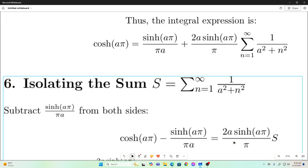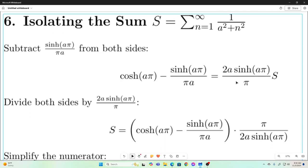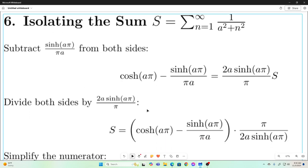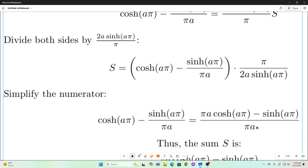All right, so we just need to, we'll just call it s, and we'll isolate it on one side. So we subtract this from both sides, giving us this. Then we divide both sides by this, giving us this. And then we're just going to simplify.